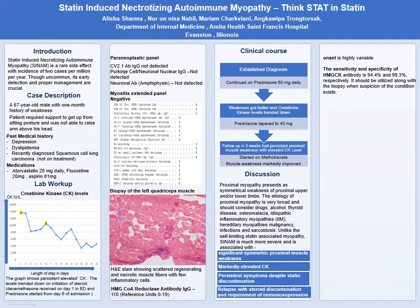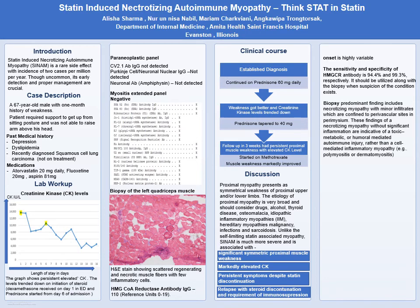Onset is highly variable. The sensitivity and specificity of the HMG-CoA reductase antibody are very high — 94% sensitivity and 99.3% specificity — and it should be utilized with biopsy to establish a diagnosis. Biopsy predominantly shows necrotizing myopathy with very few inflammatory cells, and these findings are indicative of toxic, metabolic, or humoral-mediated autoimmune injury.